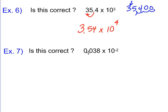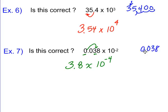One last example: 0.038×10⁻². We have a zero in front of the decimal, so we need a non-zero number first — move to 3.8. Now we think about the exponent: we need to shift two more places, making it negative 4. To verify: starting with 0.038 and moving negative two places gives 0.0038, and to get from 3.8 to 0.0038 we must move four places — confirming 3.8×10⁻⁴. Hopefully this gives you a better understanding of scientific notation and how to convert between standard and scientific forms.